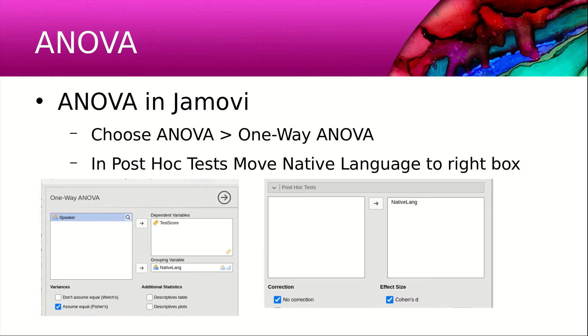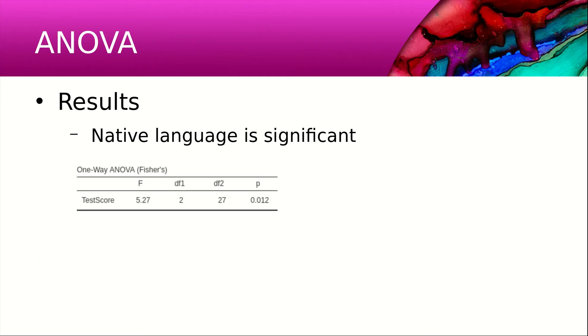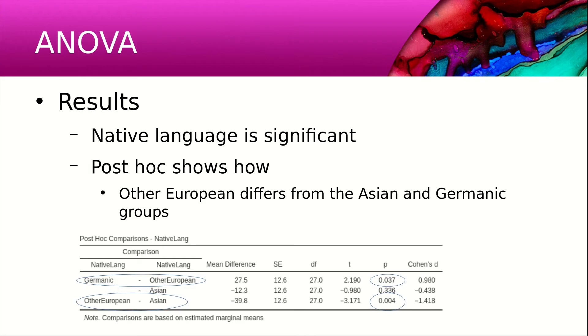To do an ANOVA in Jamovi, choose ANOVA, one-way ANOVA, and in the post-hoc test, move native language to the right box. Here are the results we get. Native language is significant, but what we don't know is which groups are significant from each other until we look at the results of the post-hoc. What we see is that the other European group is significantly different from the other two groups.